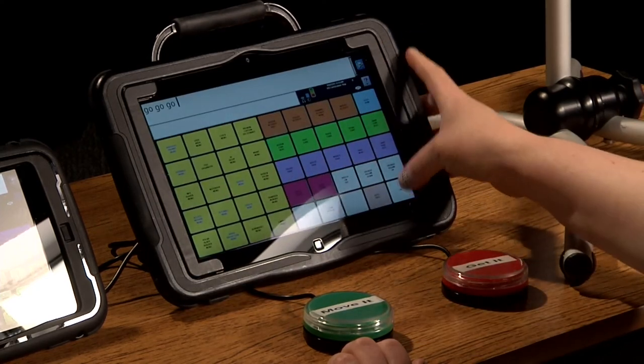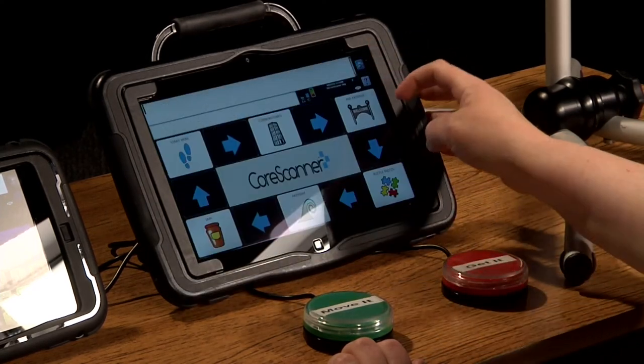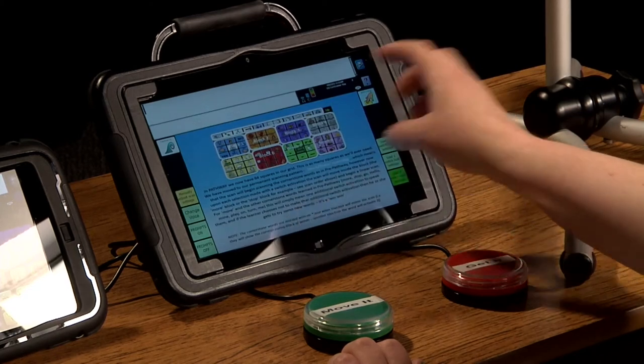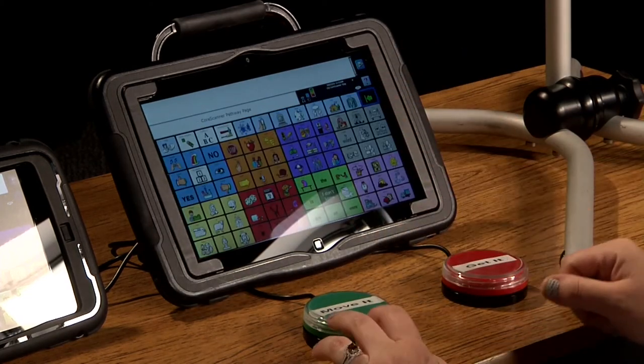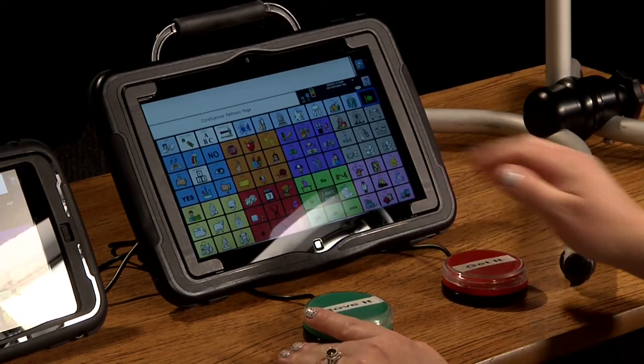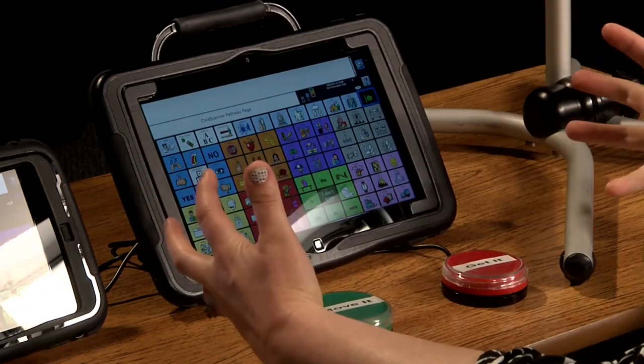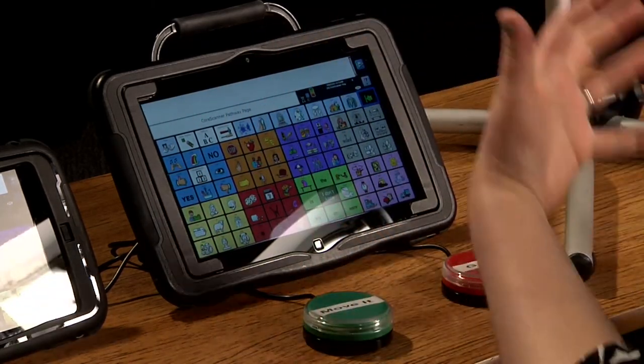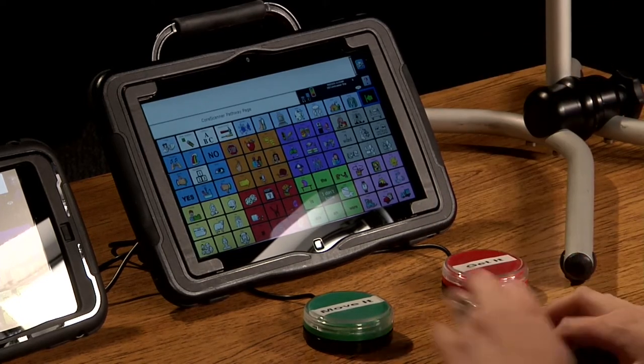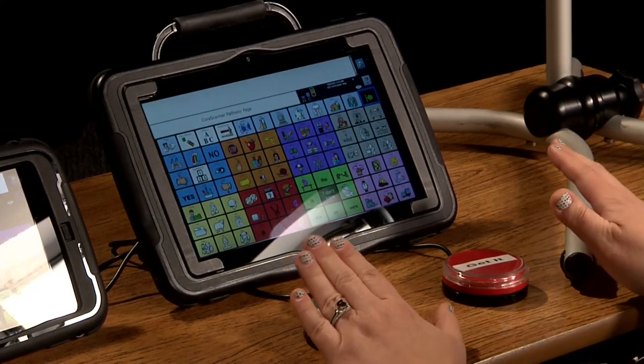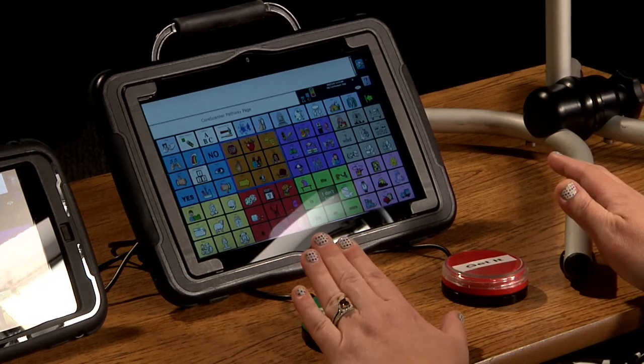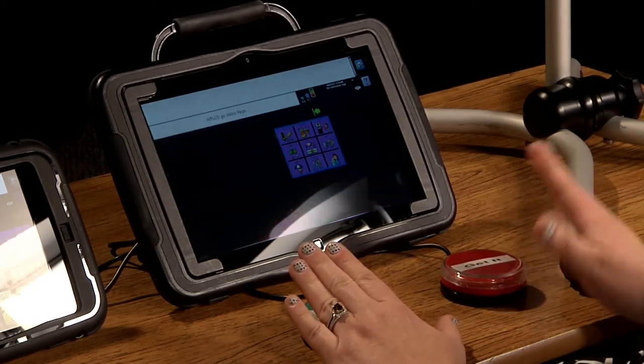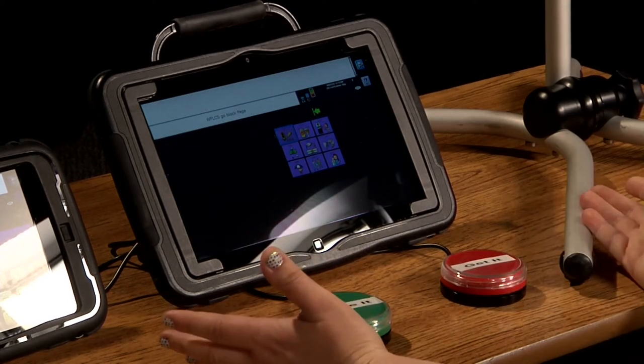I'm going to show you really quickly if I go up to the next level how I say the word go at this level. So now you can see we've expanded the vocabulary. We have lots more available here so we can continue to grow and build language. But let's see how I say go here. Core. Stop. Go. Go. Go. It's the same motor plan.